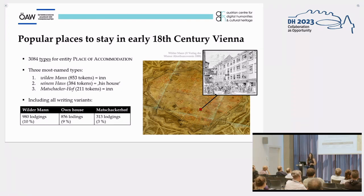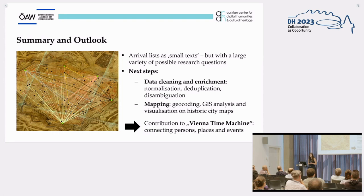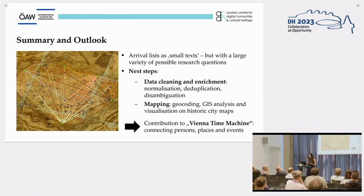Hopefully these exemplary findings have shown that the arrival lists, although relatively small texts, constitute a very rich dataset and lend themselves to a variety of possible research questions. To further expand this potential, we are currently carrying out data cleaning and enrichment, including normalization, deduplication, disambiguation, and geocoding of the toponyms. This way, the collected data can subsequently be mapped on historical city maps of Vienna and analyzed using GIS methods, to get a deeper understanding of mobility in and outside 18th century Vienna — and ultimately contribute to the overarching idea of a Vienna time machine, where persons, places, and events are connected on both a spatial and temporal level. Many thanks for your attention.